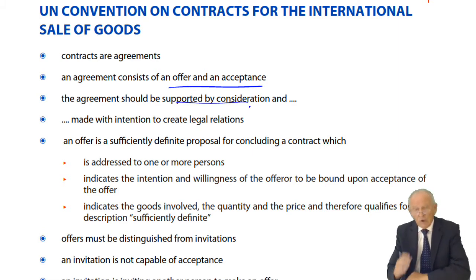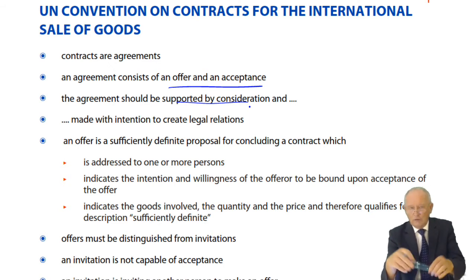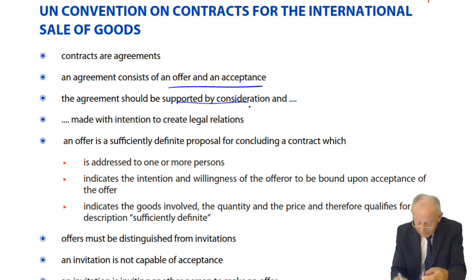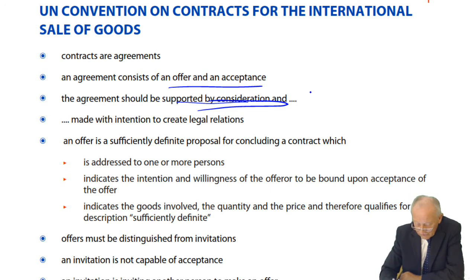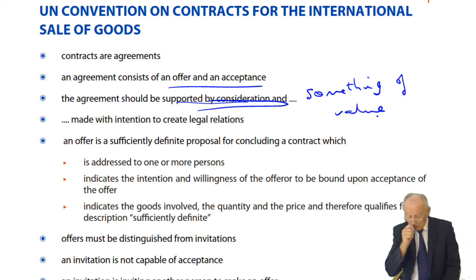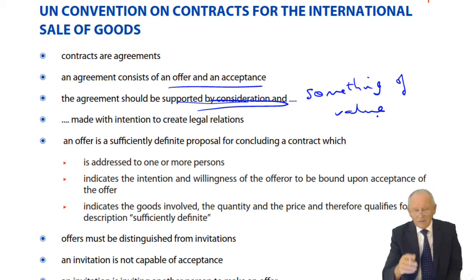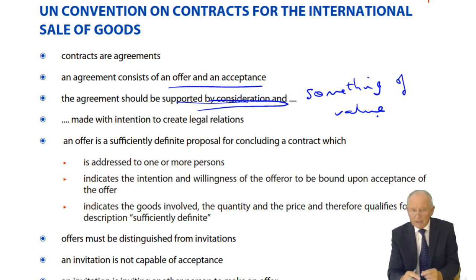The agreement should be supported by consideration. Consideration, in short, means something of value. For the United Nations Convention on Contracts for the International Sale of Goods, the consideration must be money — not a pen, not a car exchanged for a pen, but money moving from one party to the other.